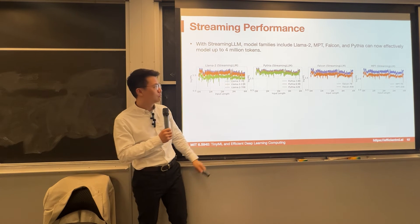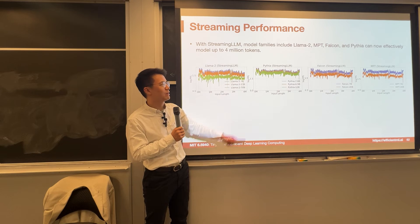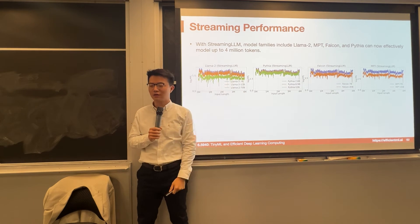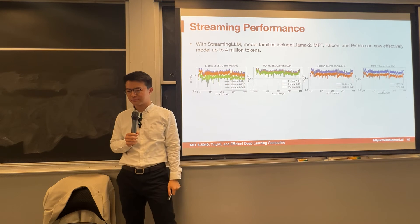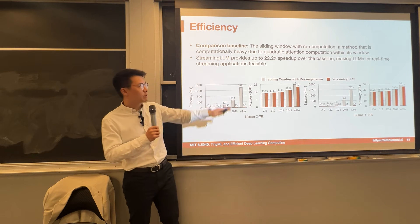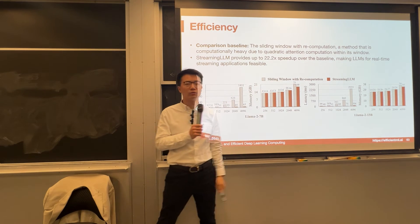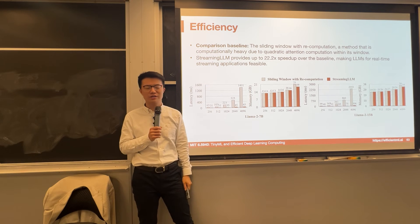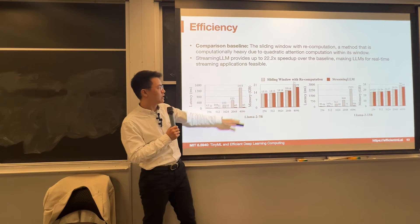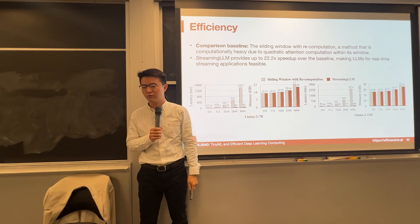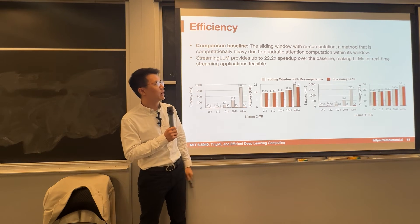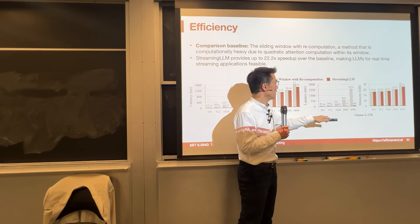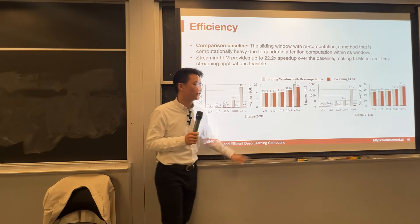The model works for different models — LLaMA2 7B, 13B, 70B — all working consistently well, all the way to 4 million tokens. Compared with the only working baseline, which is sliding window with recomputation, we can reduce the latency from 1,400 to only 65 — more than a 20x speedup compared with that baseline — while also saving memory and working well across different models.